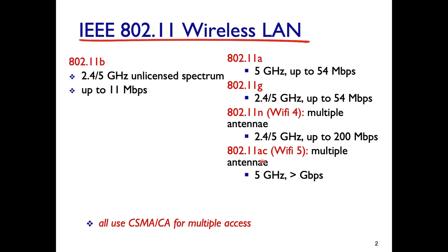The naming became complex with letters like A, B, G, N, AC, AX, so the Wi-Fi Alliance introduced version numbers: 802.11N is Wi-Fi 4, 802.11AC is Wi-Fi 5, and 802.11AX is Wi-Fi 6. Importantly, all versions of Wi-Fi use the same medium access control protocol — CSMA/CA (Carrier Sense Multiple Access with Collision Avoidance) — which we are about to study.